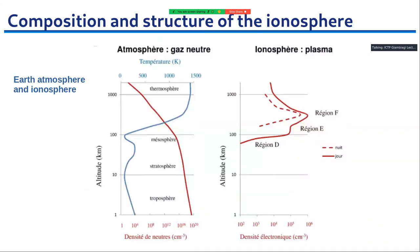Here is an altitude profile: the first plot shows the neutral gas atmosphere and the second shows the plasma density. The red curve is the density of neutrals and the blue curve is the temperature. At different altitudes we have the different layers of the atmosphere — troposphere, stratosphere, mesosphere — and these layers are controlled by changes of temperature in Earth's atmosphere.